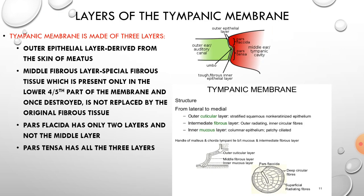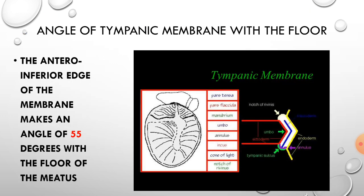In this diagram you can see the three layers of the tympanic membrane: the outer epithelial layer derived from the skin of the meatus, the middle fibrous layer of special fibrous tissue present only in the lower four-fifths of the membrane — once destroyed it is not replaced by original fibrous tissue. Pars flaccida has only two layers, not the middle fibrous layer; pars tensa has all three layers. The tympanic membrane makes an angle of 55 degrees with the floor of the meatus.